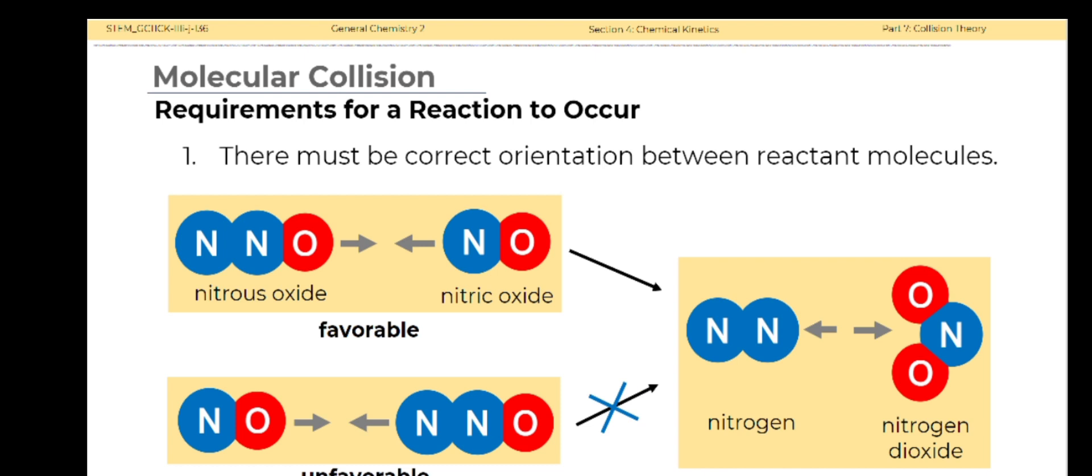With the factors mentioned, here are the requirements for a chemical reaction to occur. First, there must be correct orientation between reactant molecules. For instance, the reaction of nitrous oxide and nitric oxide to produce nitrogen and nitrogen dioxide. The oxygen of nitrous oxide colliding with the nitrogen of nitric oxide is the favorable collision in order for the products to form.